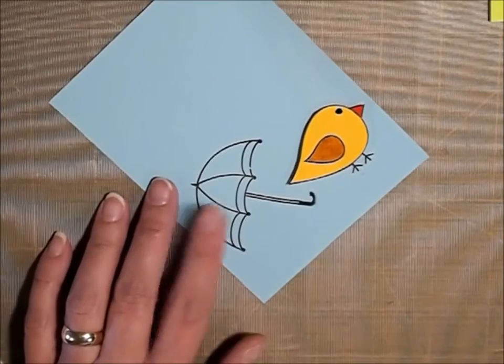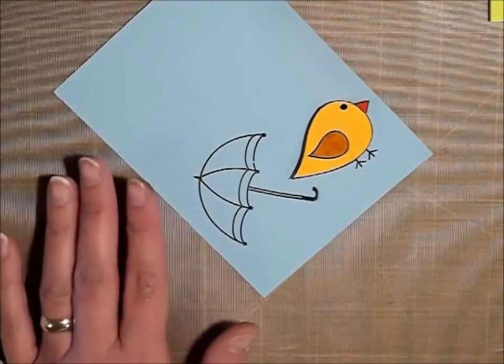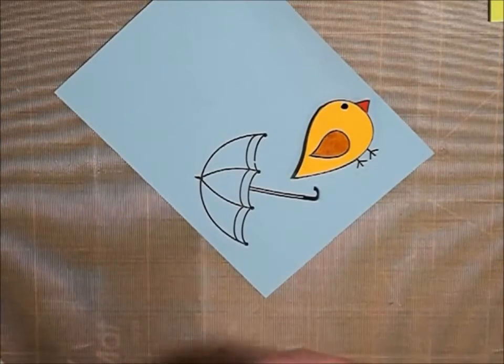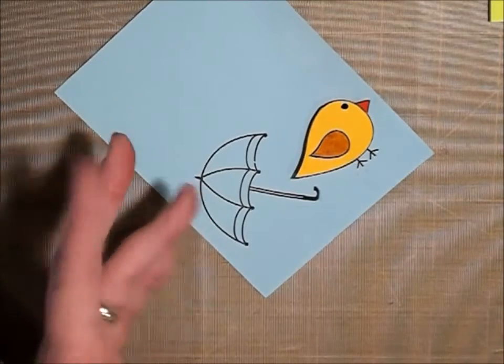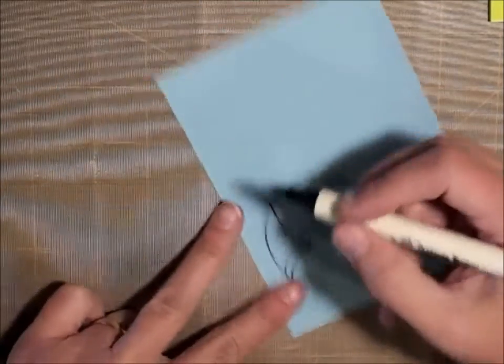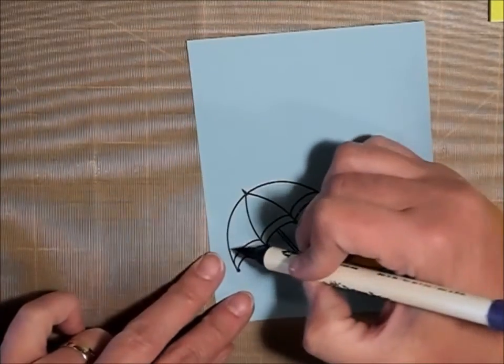And for the umbrella, I'm just going to put some different colors on it. I'm going to put some blue just to make it a little bit darker. I think I'm going to use some purple and blue just to kind of decorate it.